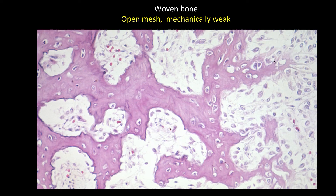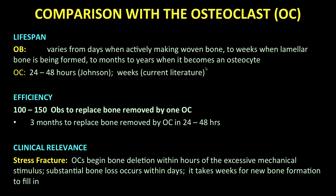Stay tuned for subsequent videos. The key differences between osteoblasts and osteoclasts have to do with lifespan and efficiency. The osteoblast's lifespan varies from days when making bone rapidly, as in this video, to weeks when lamellar bone is formed, to months or years if the cell becomes a resident osteocyte.